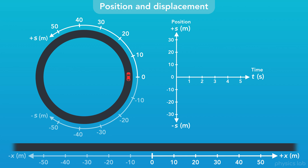As an example, if we graph the position of this car, we can see the car moves to positive 20 meters, reverses direction, and moves to negative 20 meters. The object can move as far as it wants in the positive or negative direction, and we measure its position relative to the initial zero point that we established. So that's how we describe position and displacement for circular motion.